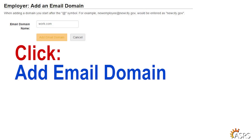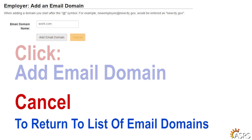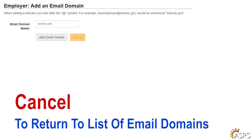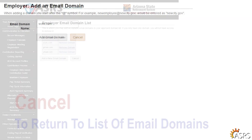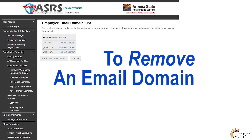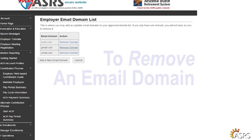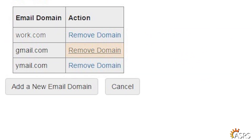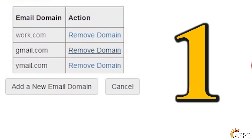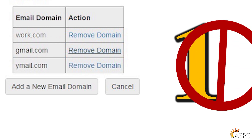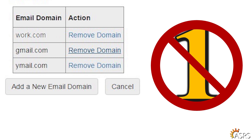Click the Add Email Domain button, or cancel to return to the list of email domains. To remove an email domain from the Employer Email Domain list, click the Remove Domain link to the right of the one you wish to remove. Note that if you have only one listed, you will not be permitted to remove it before adding a second.